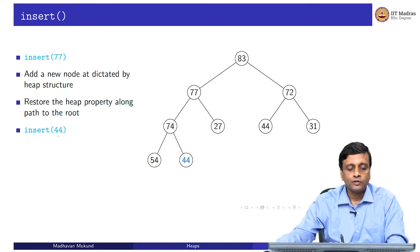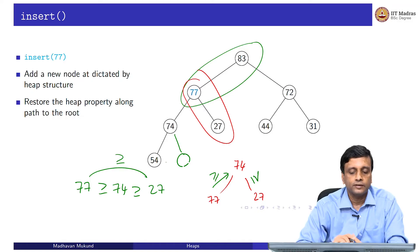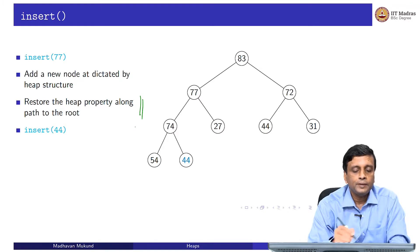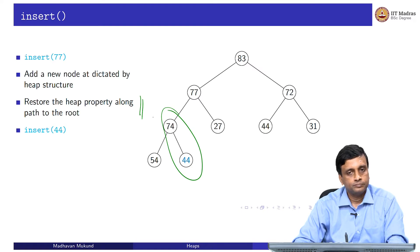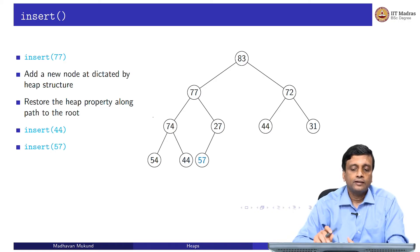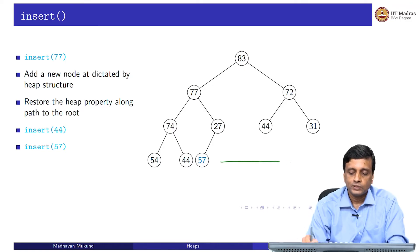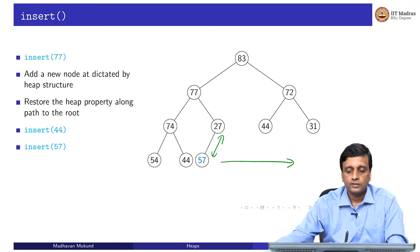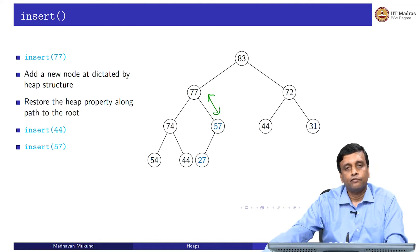For another example, inserting 44: it goes as the right child of the 74 node, and since 44 is smaller than 74, we stop immediately. Inserting 57 places it at the next position; since 57 > 27, we swap them, then compare with the parent and stop. The insert procedure places the new element at the rightmost position in the bottom row (or starts a new row if full), then bubbles it up until the heap property is restored.